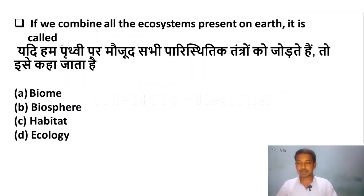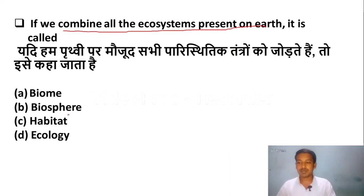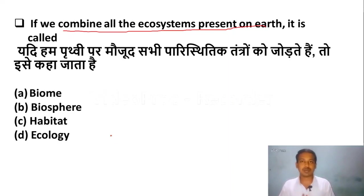The first question is: if we combine all the ecosystems present on Earth, it is called — Option A: biome, Option B: biosphere, Option C: habitat, Option D: ecology. The correct answer is biosphere. If we combine all the ecosystems present on Earth, we call it biosphere.